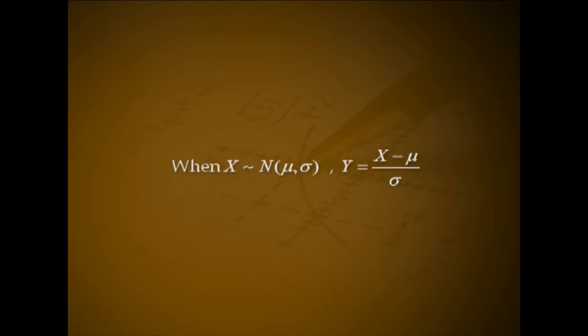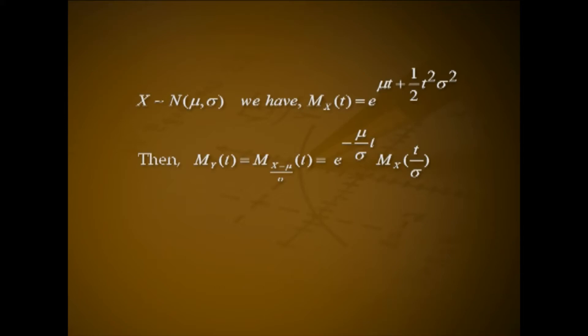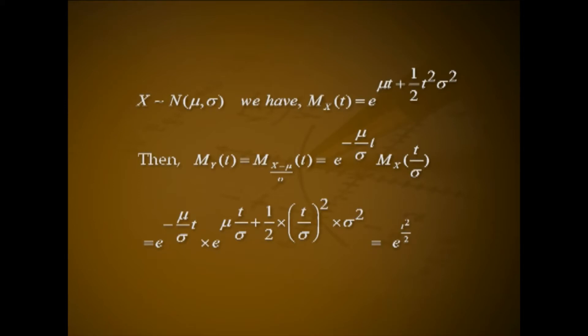When x follows normal(μ, σ), y equal to (x minus μ) divided by σ follows standard normal distribution. Proof: if x follows normal(μ, σ), M_x(t) equals e raised to μt plus 1/2 t²σ². Then M_y(t) equals e raised to (−μ/σ)t into M_x(t/σ), which simplifies to e raised to t²/2. This is the MGF of standard normal distribution. Hence y = (x−μ)/σ follows standard normal distribution.